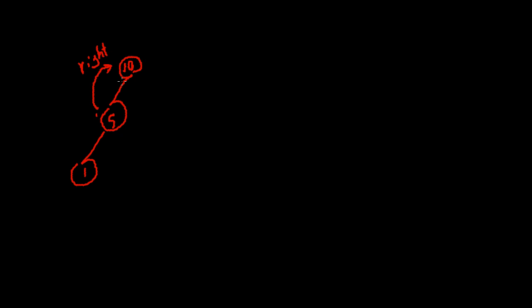For the right rotation, we do exactly the same thing but in the opposite direction. Let's say we have 10, 5, and 1, and we want to perform a right rotation. This is not balanced because to the left of 10 we have two nodes and nothing to the right. We pick 5 and move it to the top, resulting in a balanced tree.